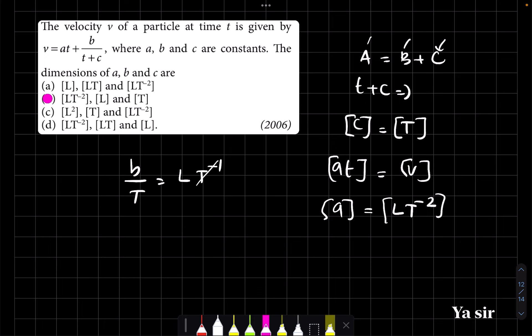Okay. So T to the power minus 1, T to the power minus 1 got cancelled. Because you multiply T and T minus 1, the same. So what is the dimension of b? Same as L.